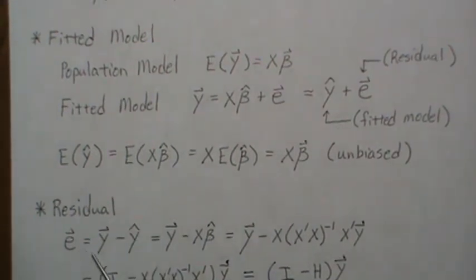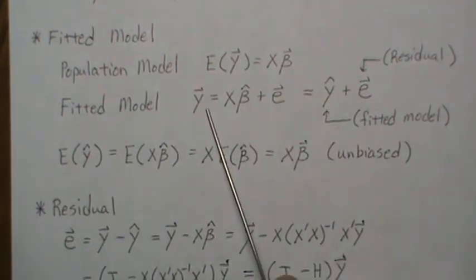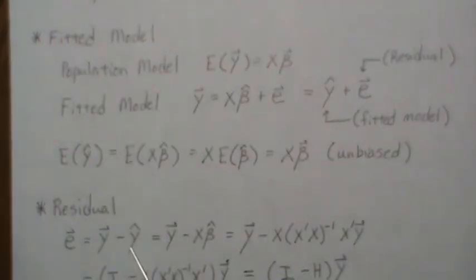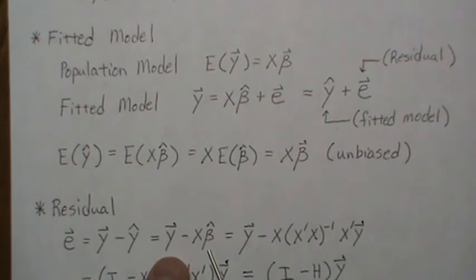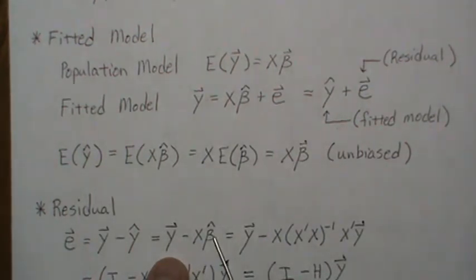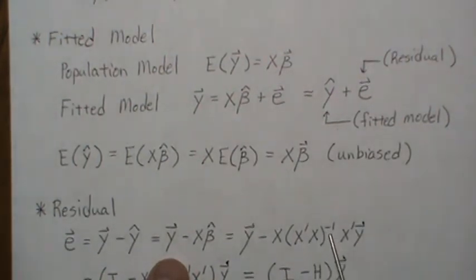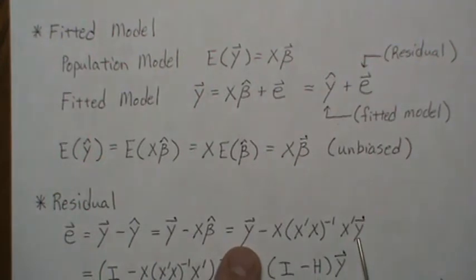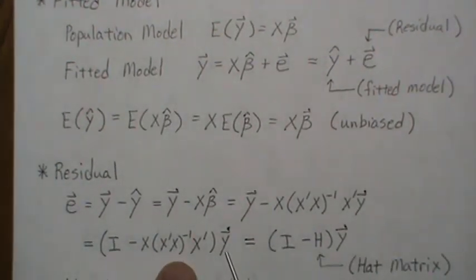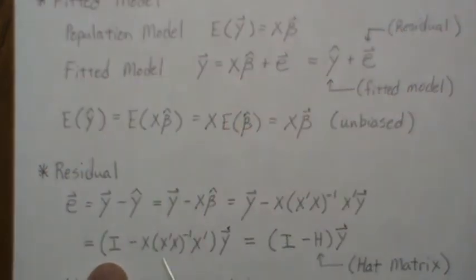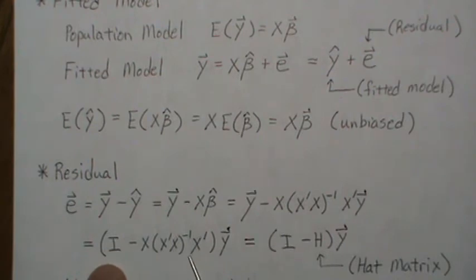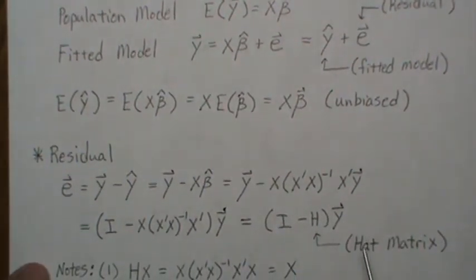The residual is the data minus the fitted model. Substituting in, the residual is Y minus X beta hat. The least squares estimate for beta is X transpose X inverse X transpose Y, so we can factor out a Y and get the residual as I minus X times X transpose X inverse times X transpose, all times Y. We generically call this matrix H and give it the name the hat matrix, which we'll study in much more detail in the next video. This is how you represent residuals in matrix notation: I minus H times the Y vector.